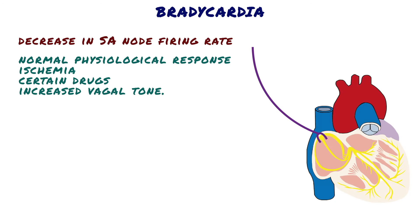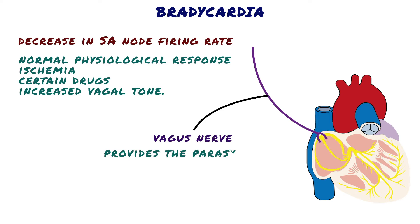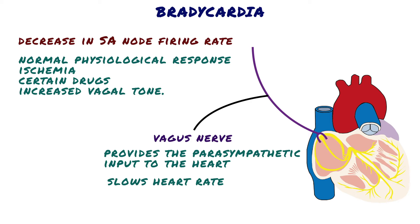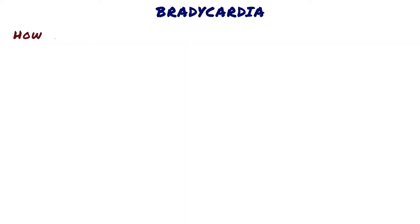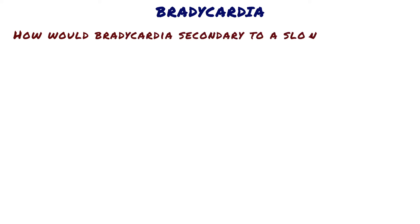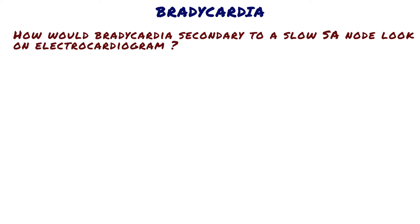Increased vagal tone refers to increased activity of the vagus nerve, which provides the parasympathetic input to the heart. The parasympathetic nervous system slows heart rate, while the sympathetic nervous system increases heart rate.